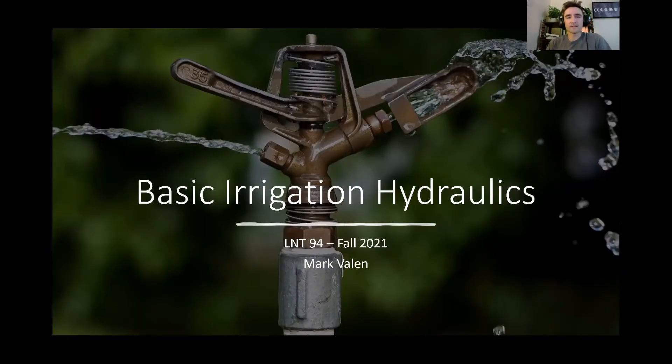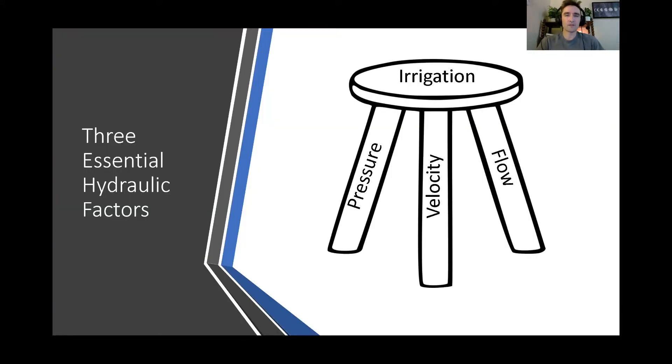So here we are with basic irrigation hydraulics. There are three essential factors that go together to make an irrigation system work. These are elements of hydraulics or the study of how water moves. And these have to do with pressure, velocity, and flow. So we're going to talk about water pressure, water velocity, how fast the water is moving through the pipe, and then we're going to talk about the flow, which is how much water is moving through the pipe.